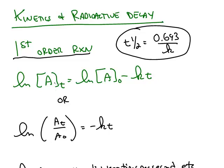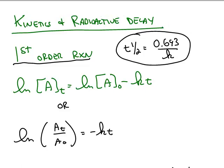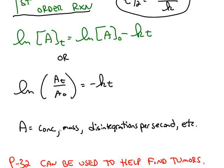Now when we were doing kinetics we were always concerned with the concentration of a chemical. In radioactive changes you might be concerned with the amount, the mass, not just the concentration, or you might be talking about how many disintegrations per second a certain amount of radioactive material has. I've dropped the square brackets, but notice in this form of the equation it's just the ratio. So it doesn't matter if you're talking about mass or concentration — the effect is the same in this formula because it's a ratio.